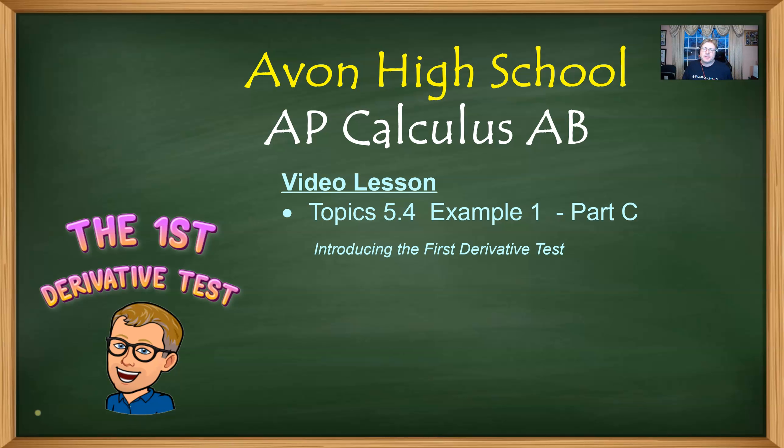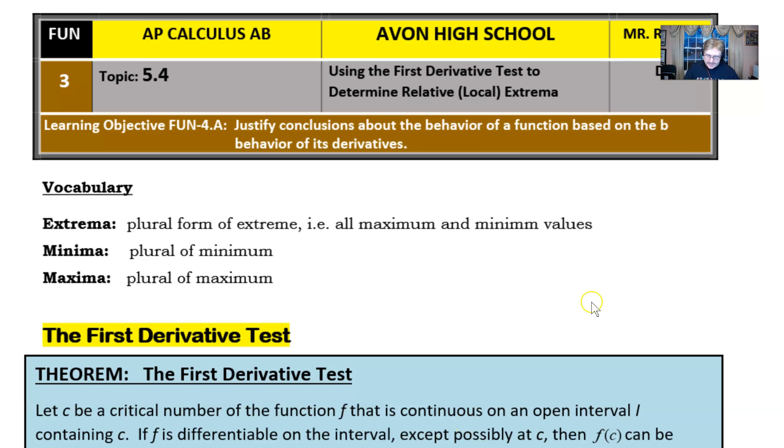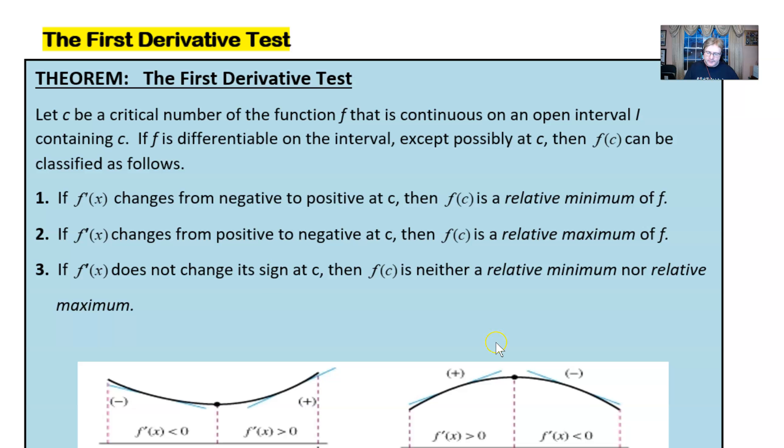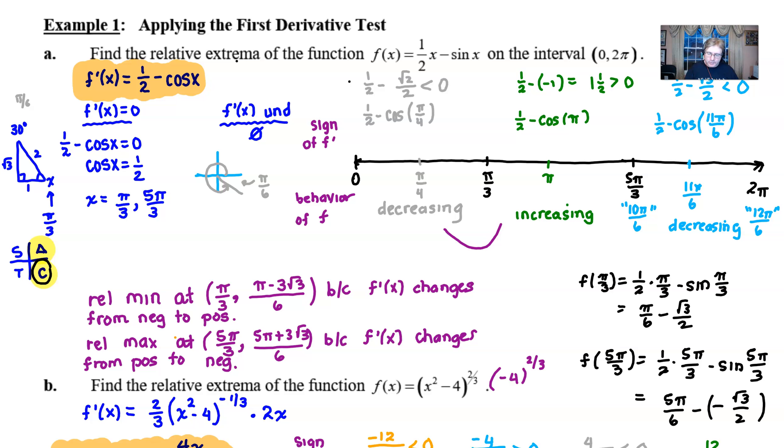Hello AP Calculus AB students, Mr. Record here from Avon, and welcome to the third and final edition of our example one that all focuses around 5.4, introducing this idea of the first derivative test. It's all about really finding the locations of a relative or local maximum or relative or local minimum. So if you remember, we introduced this idea in the first video in the series that covered part A's example, and we discussed very carefully how this derivative test is a wonderful tool by which you can determine where a function has a high point or a low point.